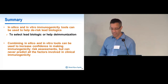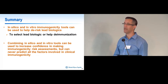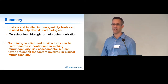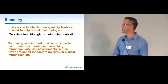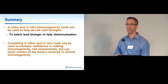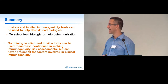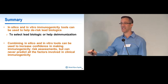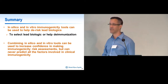In summary, in silico and in vitro immunogenicity tools can be used to help de-risk biologics — to select lead biologics and to help deimmunize lead molecules. Combining in silico and in vitro tools increases confidence in making immunogenicity risk assessments. However, we can never predict all the factors involved in clinical immunogenicity, which is why the field is tending to change the terminology from 'prediction' to 'risk assessment.'